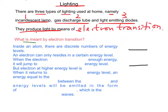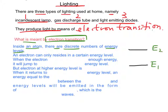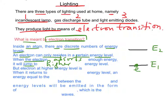What is meant by electron transition? Inside an atom, there are discrete numbers of energy levels — for example, E1, E2. An electron can only reside in certain energy levels. When an electron absorbs enough energy, it will jump to higher energy levels. In a diagram, when the electron absorbs enough energy, it will jump from energy level E1 to E2.